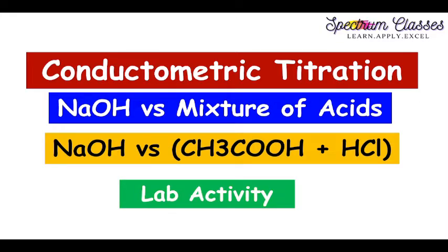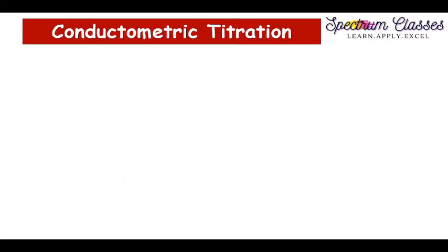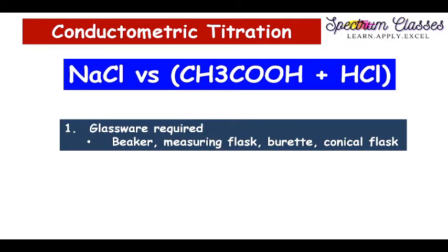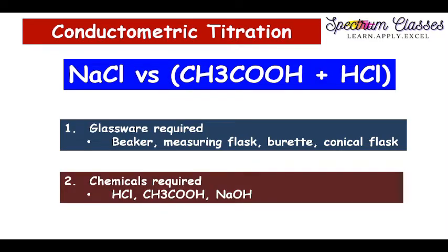For this lab activity we require some glasswares and chemicals. The glasswares required are: beaker, measuring flask, burette, and conical flask. The chemicals required are HCl, CH3COOH, NaOH, and for standardization of NaOH we also use oxalic acid, if you are going to standardize the NaOH before your titrations.